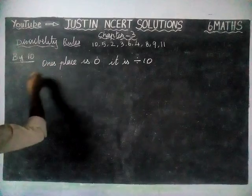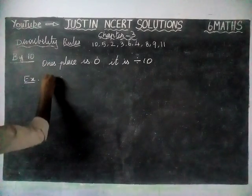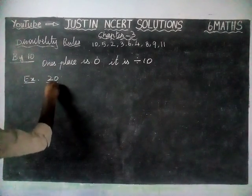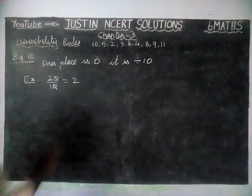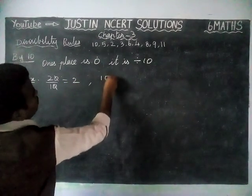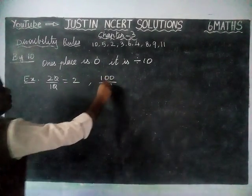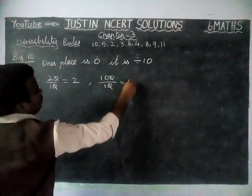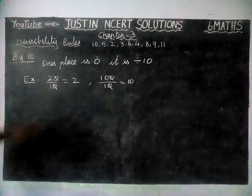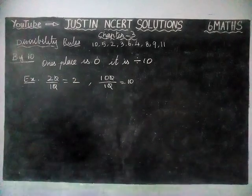We will check that with an example. We will take number 20. 20 is divisible by 10 — the 1's place is 0, cancel, and the remaining answer is 2. And if you take 100, the last 1's place is 0, cancel, and the answer is 10. So like that, for all numbers, if the 1's place is 0, that number is divisible by 10.